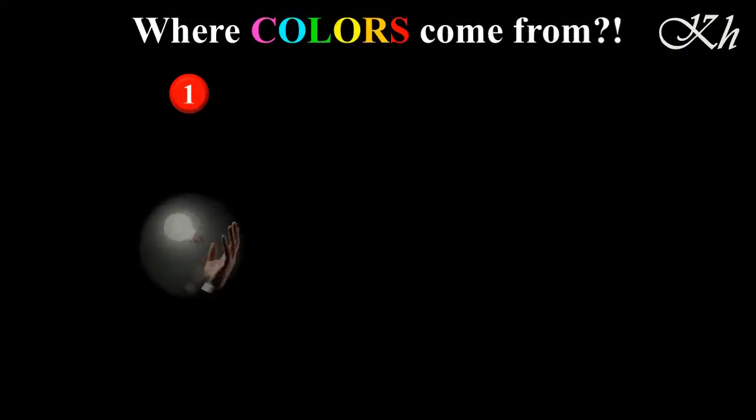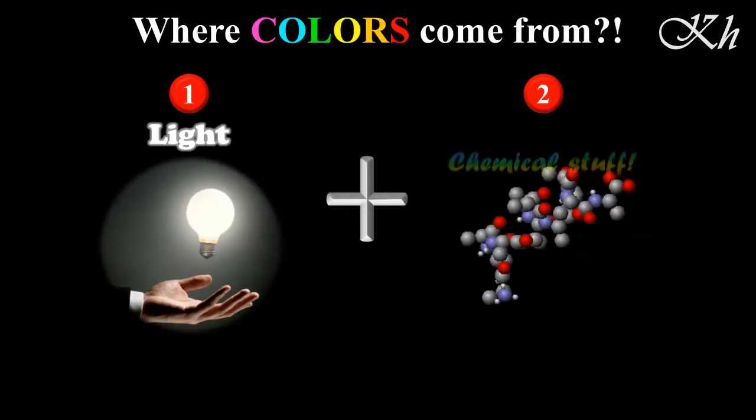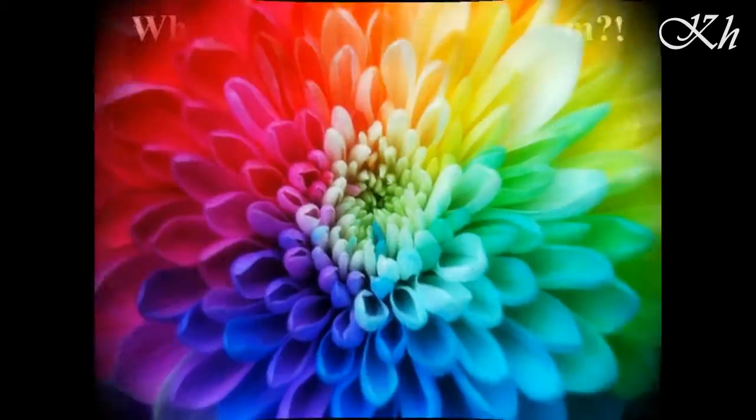It's chemistry and stuff, right? Colors are just the products from the interaction of light with the molecules a dye is made of. Together they make colors.